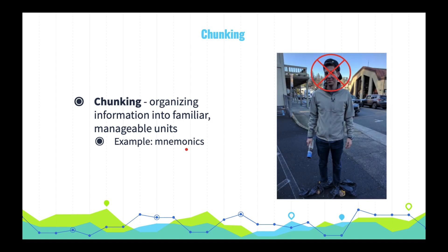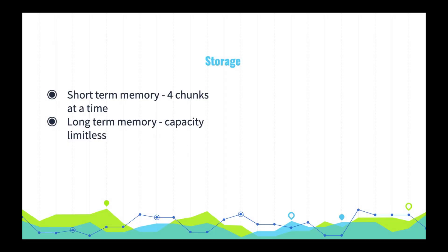So if I was having trouble remembering the names of all the girls who rejected Frank when he asked them out last night, I could just remember: Bishop, Britney, Isabel, Sarah, Hannah, Olivia, Paula. Hey — Hannah almost said yes! I don't think so. Let's move on to storage. The theme here is that our short-term memory is limited, while our long-term memory is very powerful with limitless capacity.